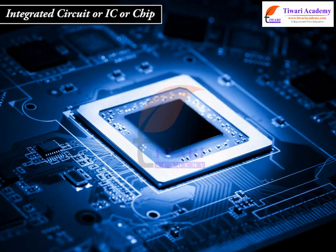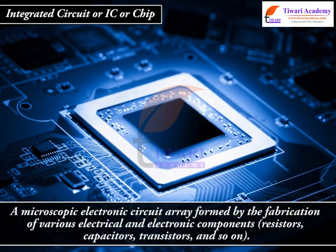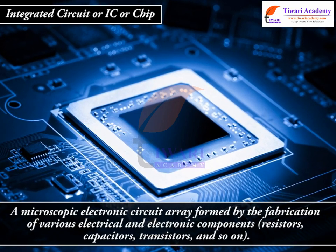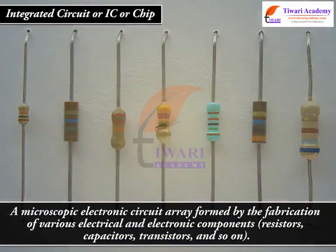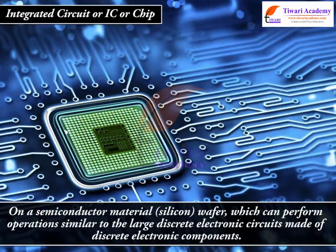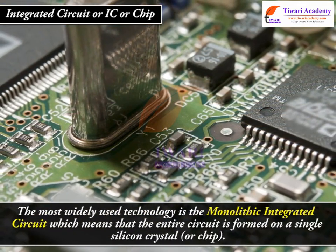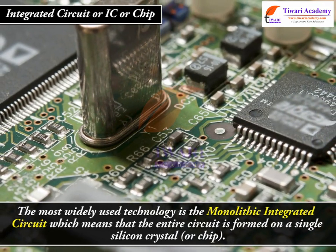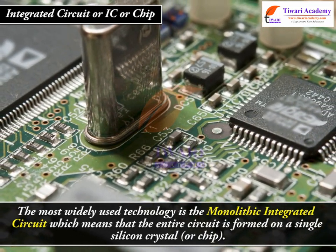An integrated circuit, or IC, or chip, is a microscopic electronic circuit array formed by the fabrication of various electrical and electronic components — resistors, capacitors, transistors and so on — on a semiconductor material, a silicon wafer, which can perform operations similar to large discrete electronic circuits. The most widely used technology is the monolithic integrated circuit, which means the entire circuit is formed on a single silicon crystal or chip.